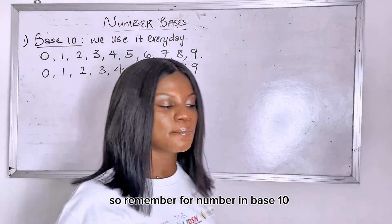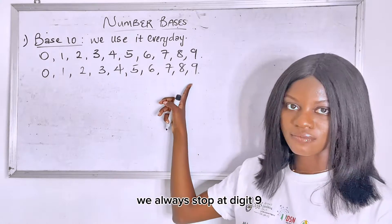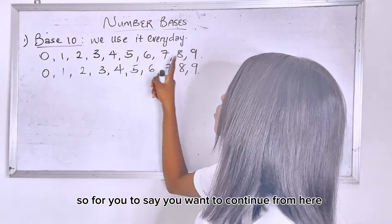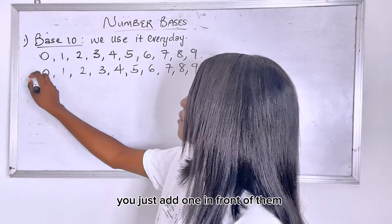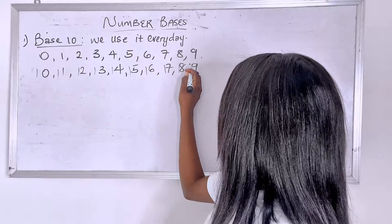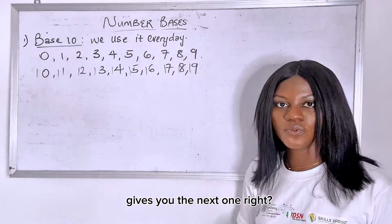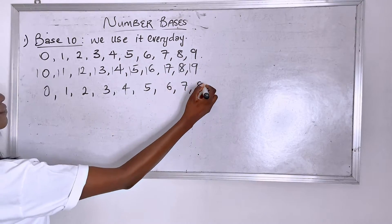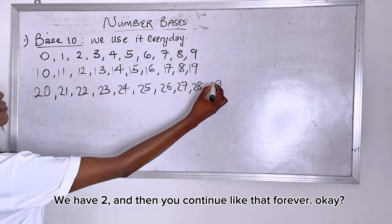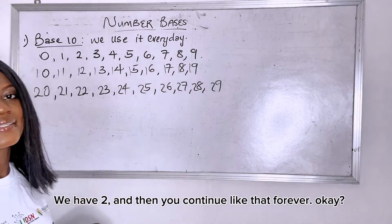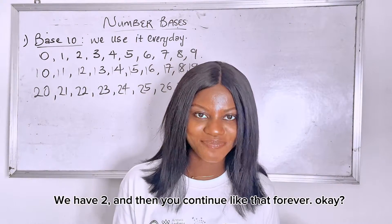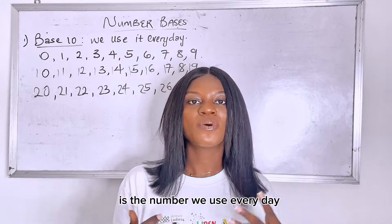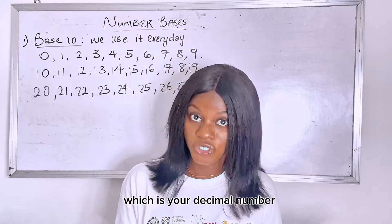So remember, for a number in base 10, we always stop at digits — we always stop at 9. For you to continue from there, you just add 1 in front, which gives you the next one. If we have it again, add 2, and then you continue like that forever. So now you know why we say the number in base 10 is the number we use every day, which is your decimal number.